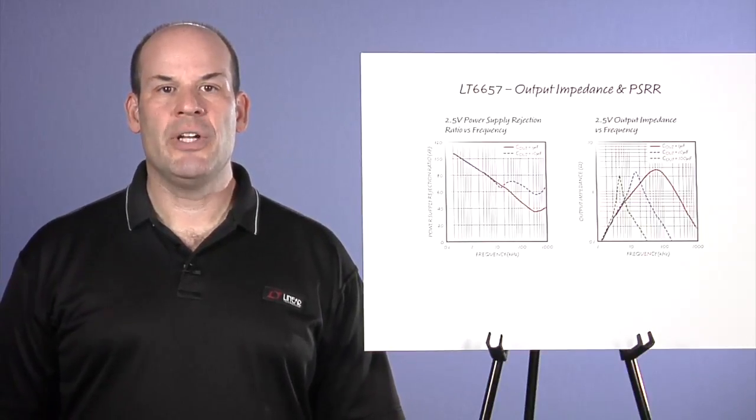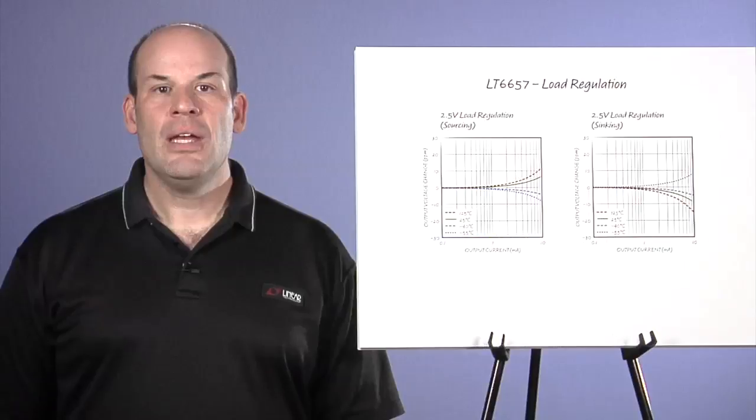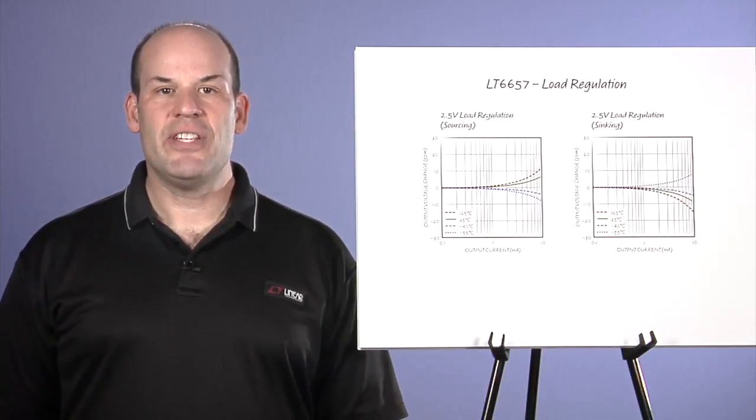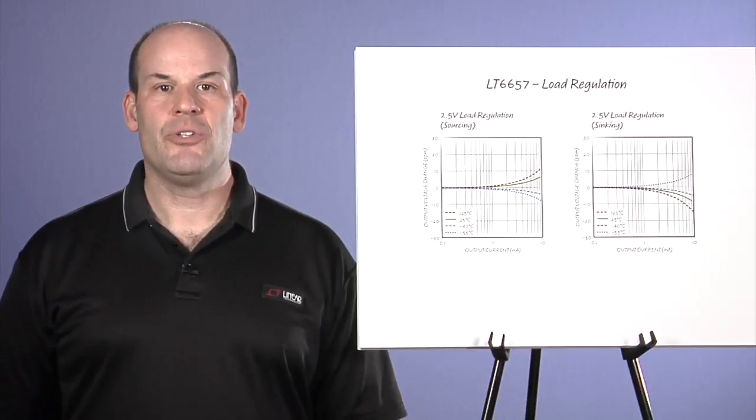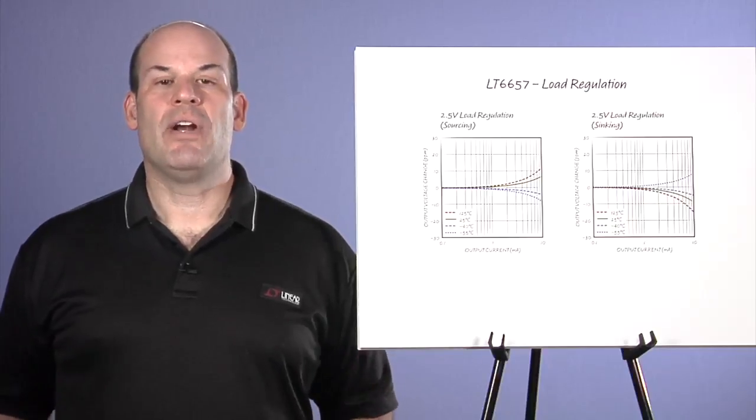LT6657 also has a strong drive capability. Load current range is 10 milliamps source and sink with less than 1 ppm per milliamp load regulation error. LT6657 includes overcurrent and thermal protection to avoid damage in fault conditions. LT6657 can be used to bias a variety of sensors, drive difficult ADC reference inputs, drive multiple ADCs and DACs, or power a small subsystem with reference grade precision.